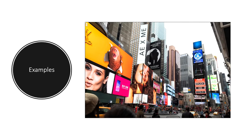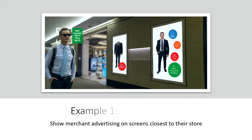First example: in a shopping mall you can show merchant advertising on screens closest to their store. If you've got a men's store, put advertising right on the screens just outside or leading up to the store. Similarly, if you've got a shoe store in the mall, as people are getting closer, show the shoe ads on the monitors in that area.